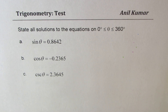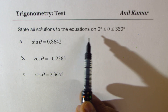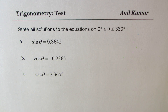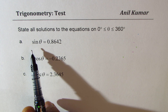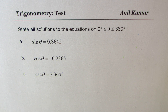I'm Anil Kumar. Here are a few questions from the basic trigonometry test paper. You need to state all solutions to the equations on the interval 0 to 360 degrees: sin theta is 0.8642, cos theta is negative 0.2365, cosecant theta is 2.3645. You can pause the video, answer this question, and then look into my suggestions.